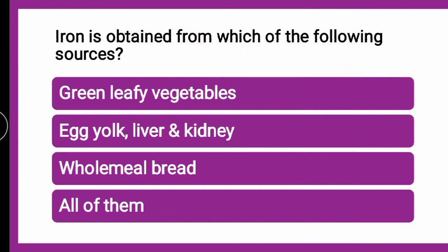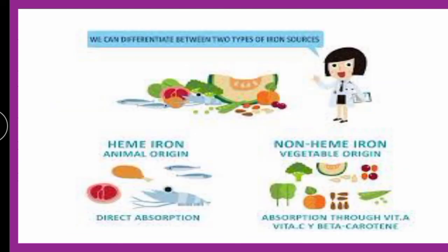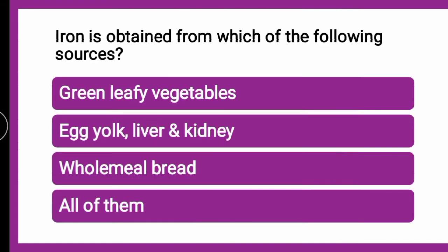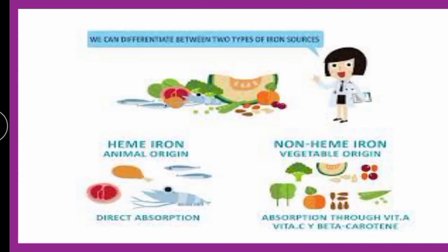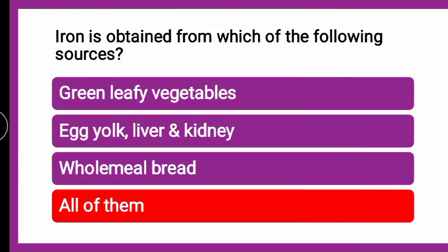Next question: Iron is obtained from which of the following sources? Whether iron is obtained from green leafy vegetables, egg yolk, liver and kidney, wholemeal bread, or all of them? Iron-rich foods include liver, fish, meat, and various vegetable sources. Green leafy vegetables, egg yolk, liver, kidney, and wholemeal bread — wheat bread — are all sources of iron. So the correct answer is all of them.